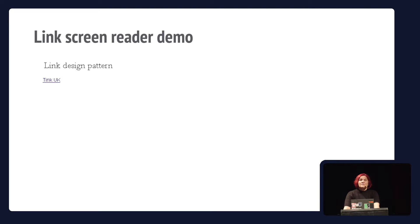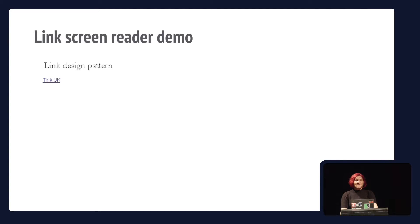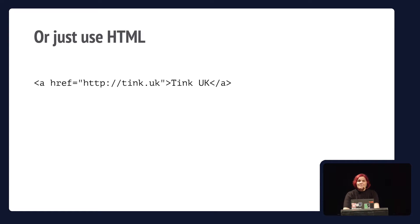So what we have now is something that started as a span with no accessibility information and no keyboard focus or interaction, and we've added all those things ourselves. A screen reader user tabbing onto it hears the link text and is told it's a link, then can use enter to activate it. But that's an awful lot of work to do something remarkably basic.